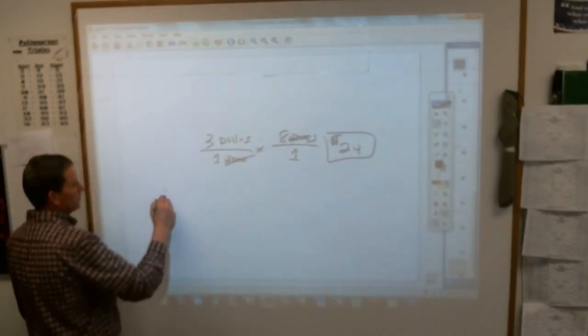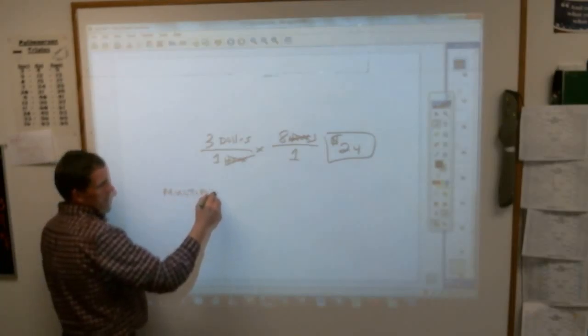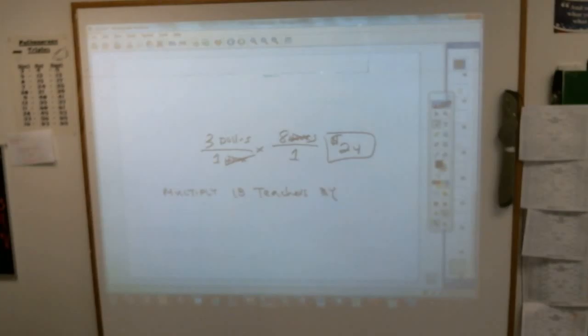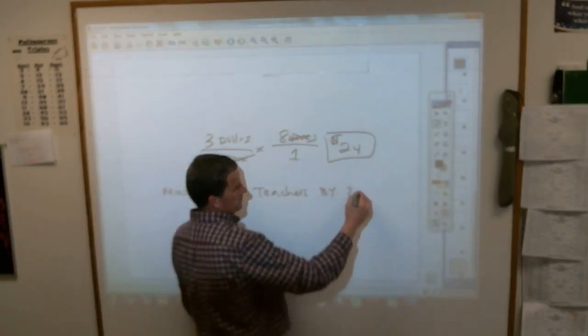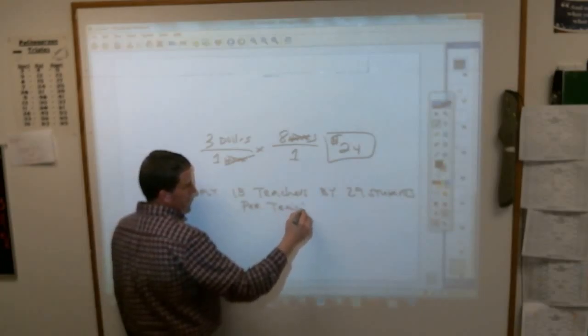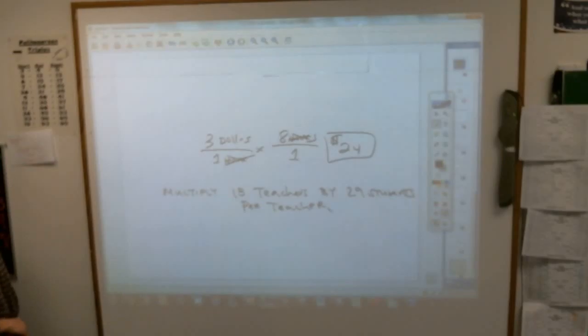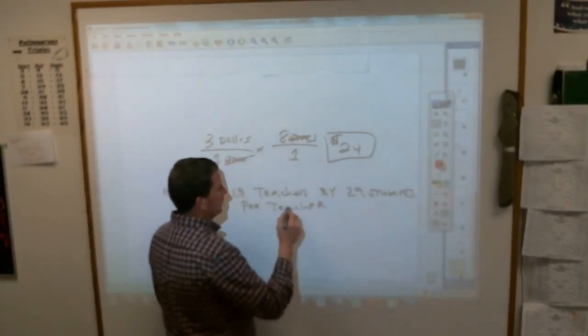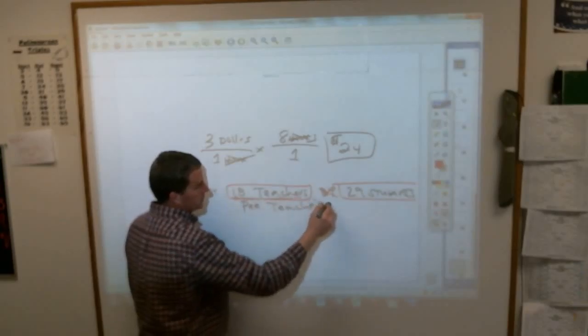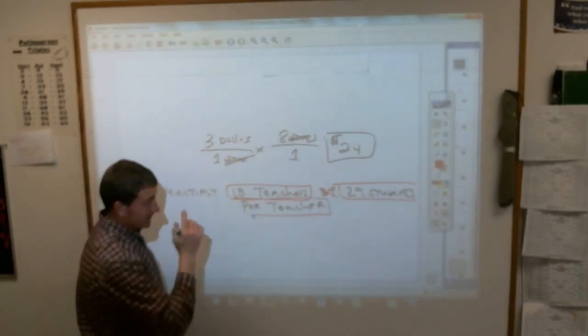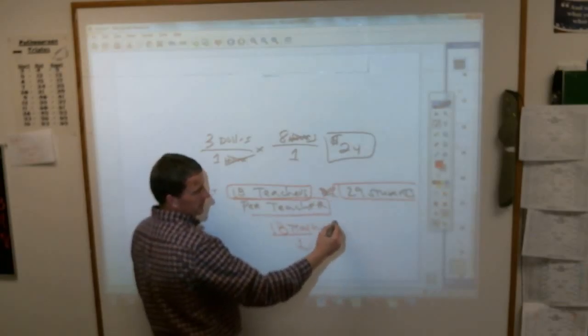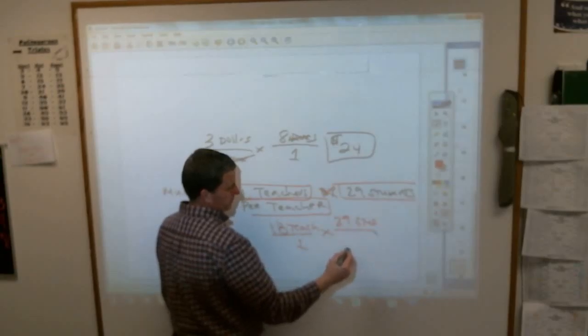Here's one from the book. Write this one down. Multiply 18 teachers by 29 students per teacher. What would that look like on your paper? Well, what two things are you multiplying together? You're multiplying 18 teachers by 29 students per teacher. Writing that on your paper, you don't have to copy the problem. This is what I need to see on your paper. 18 teachers make it a fraction by putting it over 1. You're multiplying it by 29 students per teacher.